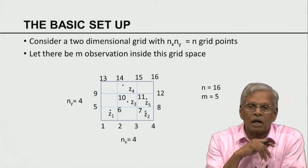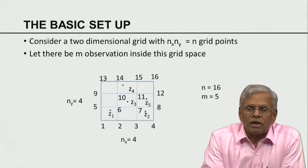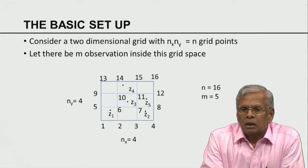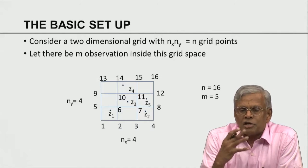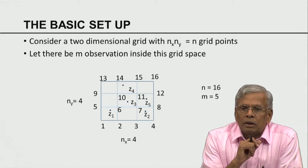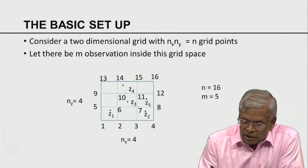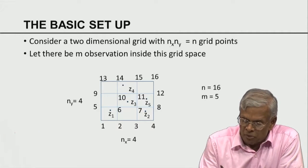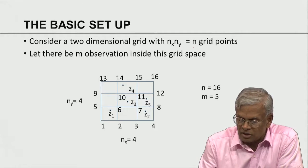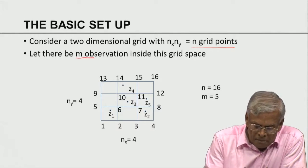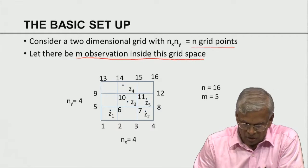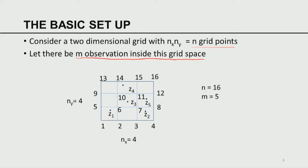What is the basic idea of this method called optimal interpolation? I am going to illustrate this using a simple 2D grid problem, which can be extended to 3D as well. Consider a 2-dimensional grid with nx times ny grid points, where n is the total number of grid points, and let there be m observations inside this grid space. As an example, nx is 4, ny is 4, so n is 16. I have a set of 5 observations z1, z2, z3, z4, and z5. We can think of these observations as scalar observations — temperature, pressure, humidity, or concentration of some chemical.